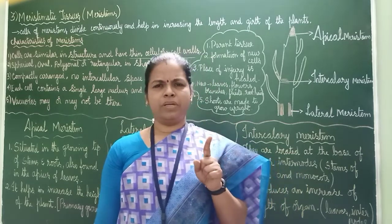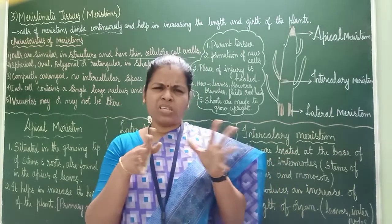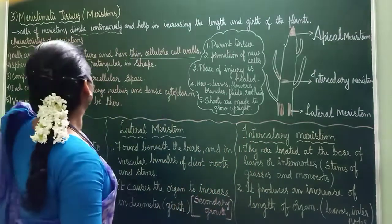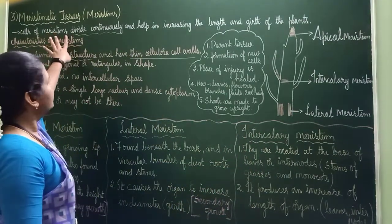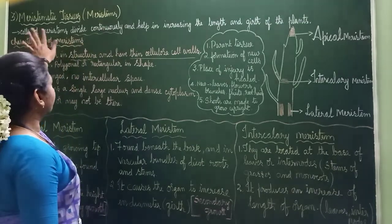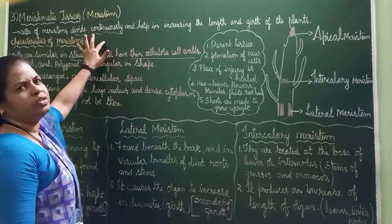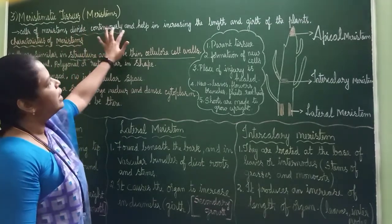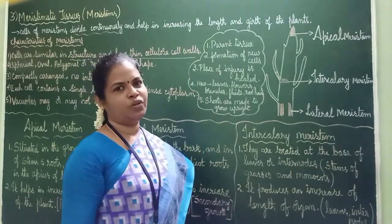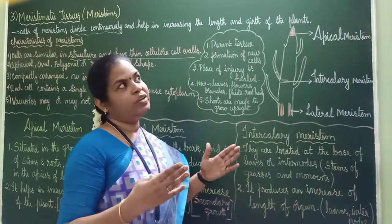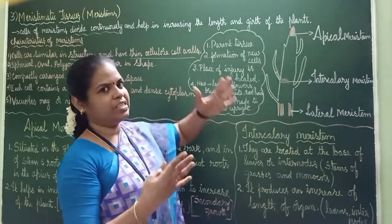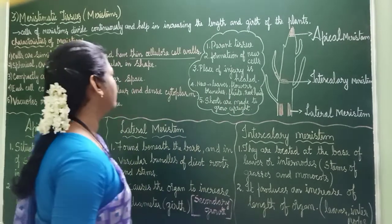Meristematic tissues are always busy in cell division. Cells of meristems divide continuously and they help in increasing the length and girth. When they divide, they help the plants to grow in length as well as in girth. That is the first point.